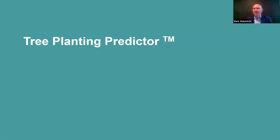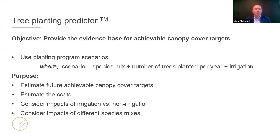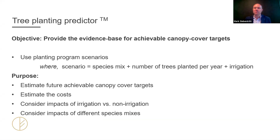That's where the very beginnings of the tree planting predictor were born — a series of formulas developed in an Excel sheet. Two years later, we've got a fully planned professional and light version. The objective of the tree planting predictor is to provide that evidence base for achievable canopy cover targets. It's not good enough anymore to have broad, ambitious targets — they need to be grounded in an evidence base and linked to the cost of achieving them.